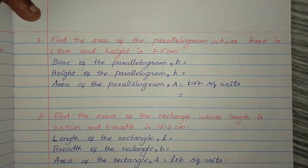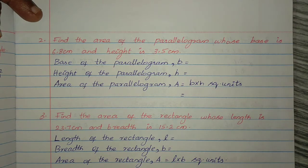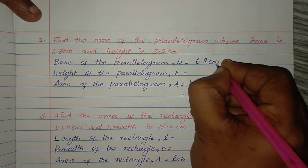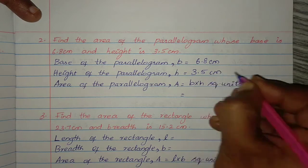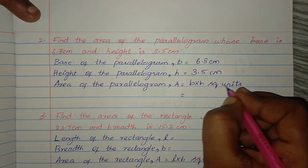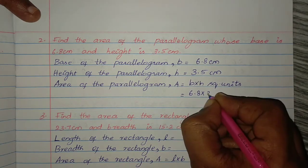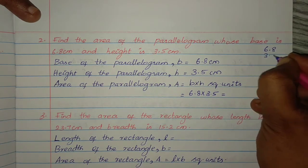Find the area of the parallelogram whose base is 6.8 cm and height is 3.5 cm. Area of the parallelogram is base into height. Base is given, height is given — let's find it. Base of the parallelogram is 6.8 cm. Height of the parallelogram is 3.5 cm. Area of the parallelogram = 6.8 × 3.5 cm.